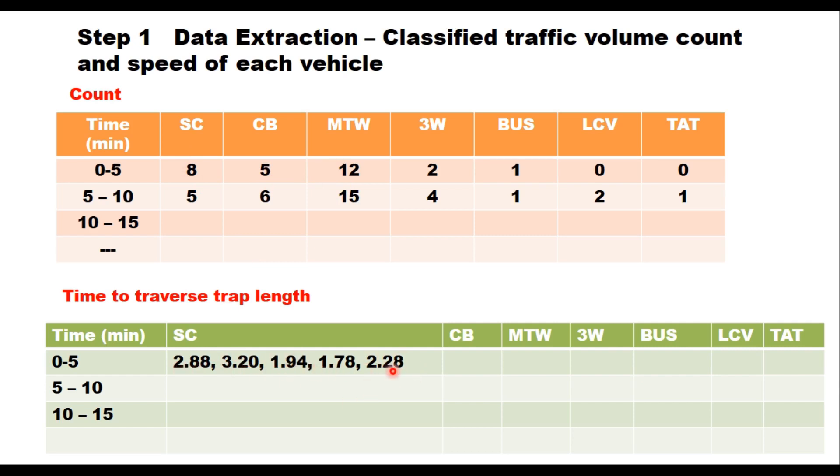You can take randomly 4 or 5 vehicles of each category and take the time taken by the vehicle to traverse the track length, and then take average of these times.